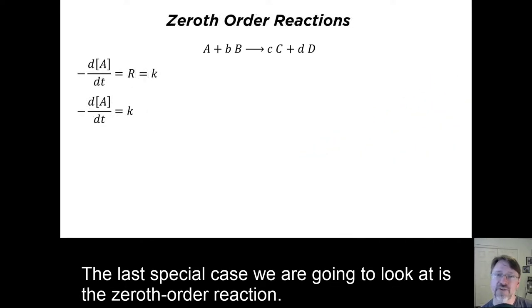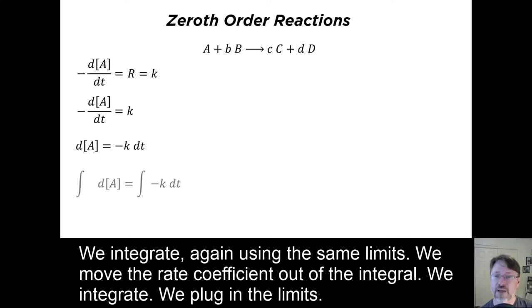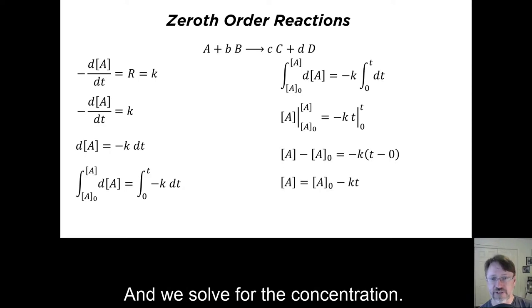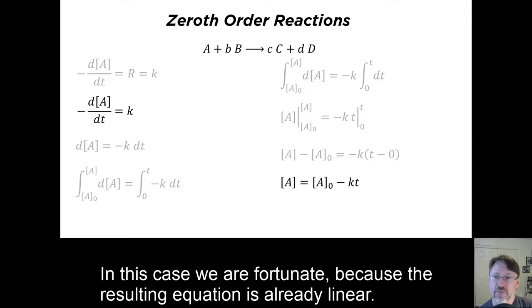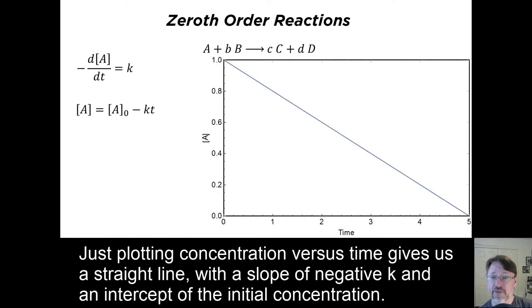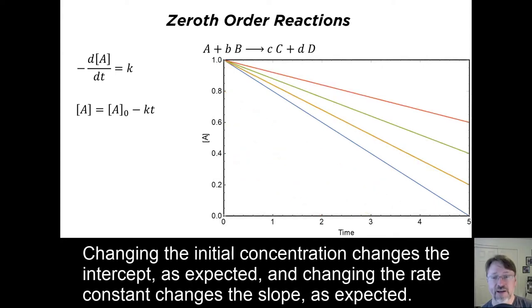The last special case we are going to look at is the zeroth order reaction. This one is quite simple compared to the first order and second order cases. We rearrange the derivative, we integrate, again using the same limits, we move the rate coefficient out of the integral, we integrate, we plug in the limits, and we solve for the concentration. In this case we are fortunate, because the resulting equation is already linear. Just plotting concentration versus time gives us a straight line, with a slope of negative k and an intercept of the initial concentration. Changing the initial concentration changes the intercept, and changing the rate constant changes the slope, as expected.